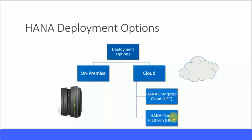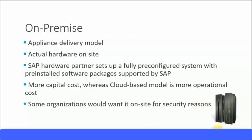Let's look at the on-premise option. On-premise means the actual hardware will be on site — the appliance will be delivered on site. The SAP hardware partner, which can be Lenovo, Fujitsu, HP, or Dell, can set up a fully pre-configured system with pre-installed software packages supported by SAP. There will be more capital costs incurred initially because of the acquisition of the hardware, whereas the cloud-based model is cheaper in the longer run and involves more operational cost, as you will have monthly expenses as a subscription.